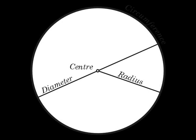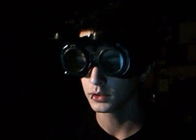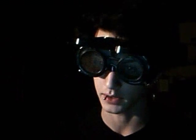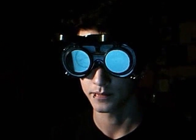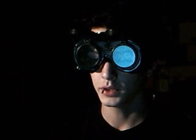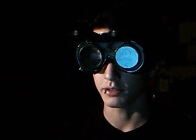This is a circle. It is the set of all the points in a plane at a fixed distance, called the radius, from a fixed point, the centre. The formula to work out the area for a circle is pi times the radius squared.